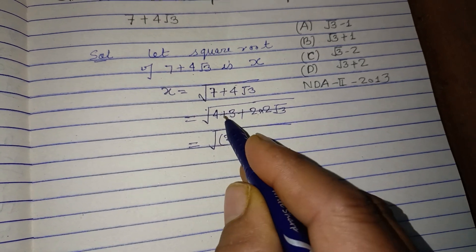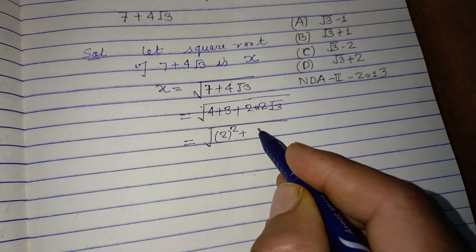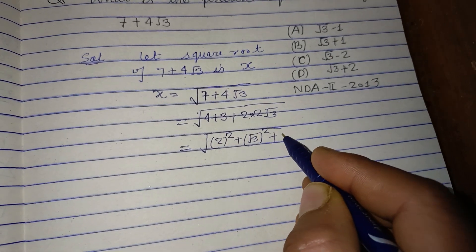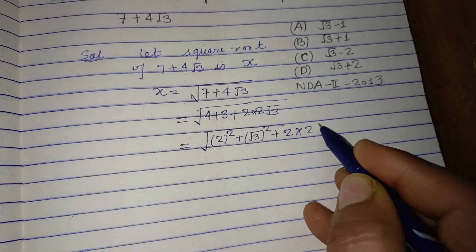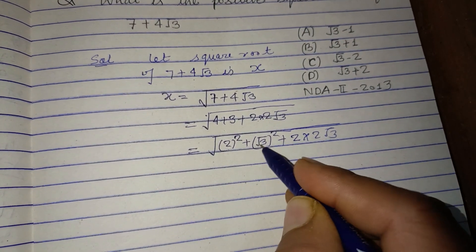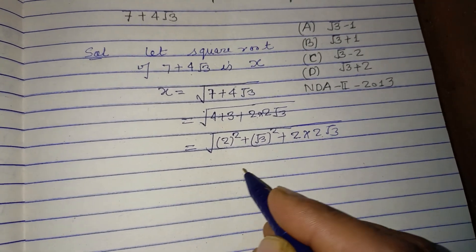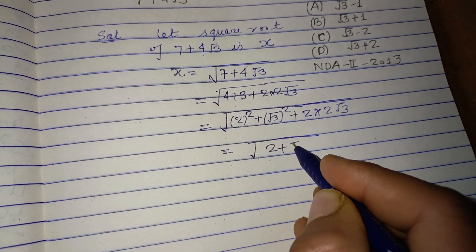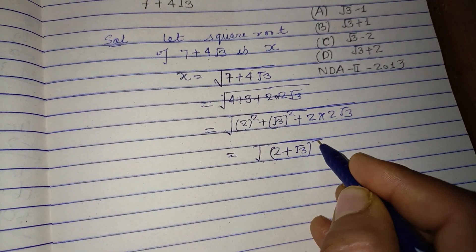This is the algebraic form a² + b² + 2ab, which equals (a + b)². So this becomes (2 + √3)².